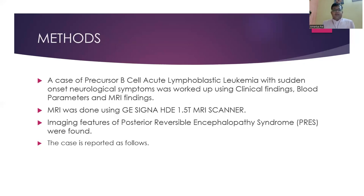In this case, we present a case of a precursor B-cell acute lymphoblastic leukemia patient with sudden onset neurological symptoms, who was worked up using clinical findings, blood parameters, and MRI findings. MRI was done using a GE Signa HD 1.5 Tesla MRI scanner. Imaging features of posterior reversible encephalopathy syndrome were found.